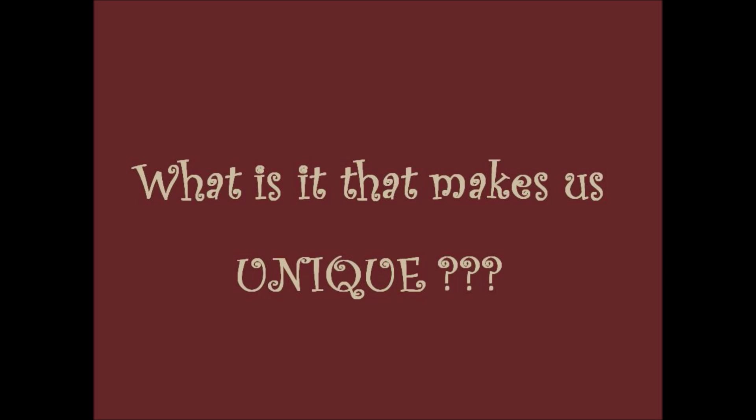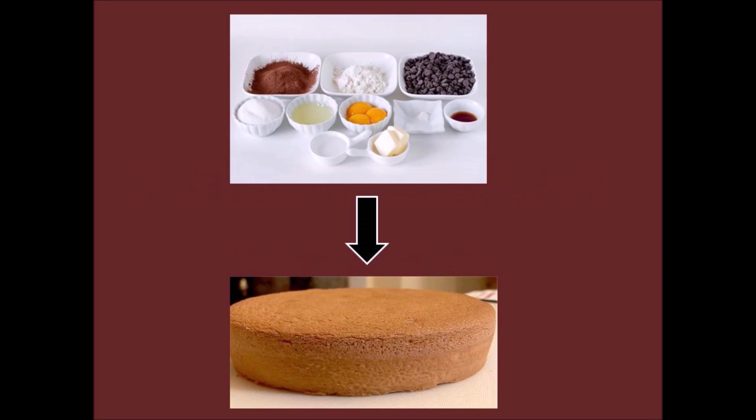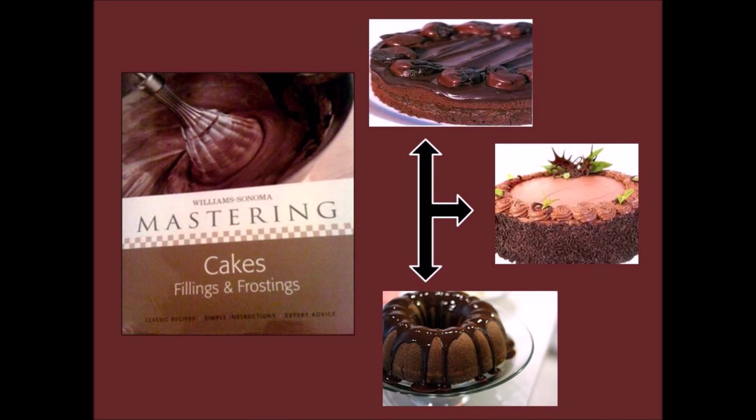Let's understand this with an example. We all love cakes, don't we? Cakes are basically made up of flour, eggs, sugar, butter, and baking powder — and yet we have so many different types of cakes. This is because each cake has these ingredients, along with some other things added or deleted in different proportions, so it makes each cake unique.